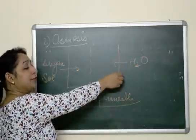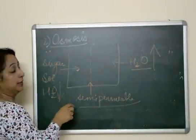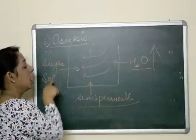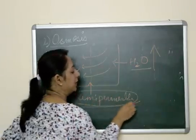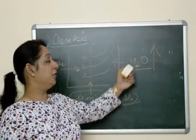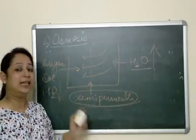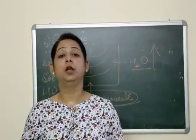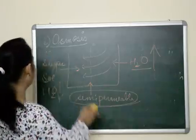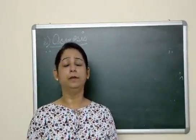Suppose on one side of a beaker we have a sugar solution — less water — and on the other side pure water — more water. In the centre we place a semi-permeable membrane. Water will move from its higher concentration to its lower concentration through the semi-permeable membrane. In diffusion we say 'when they are in direct contact,' but in osmosis there is a semi-permeable membrane. Water molecules will keep moving until both sides have an equivalent number of water molecules — reaching equilibrium. This explains the raisins swelling up as well.